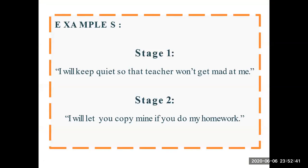For example, in stage 1, a child might say: 'I will keep quiet so the teacher won't get mad at me,' or 'I will keep quiet otherwise I can be punished by the teacher.' And in stage 2, the thinking becomes: 'I will let you copy mine if you do my homework.' So the child has learned to avoid punishment by making an exchange with a classmate — if you let me copy, I will do your homework. That represents stage 1 and stage 2.